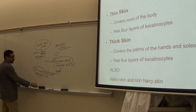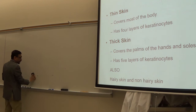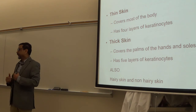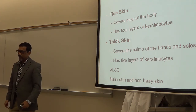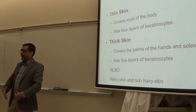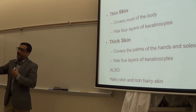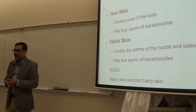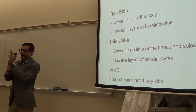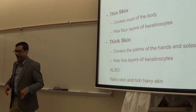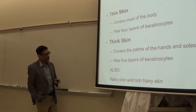In your body you have two types of skin: thick and thin. Thick skin is present in the palms and soles of your feet. The rest of the body is covered by thin skin. Another way we divide the skin is by looking at the presence of hair: hairy skin and non-hairy skin.